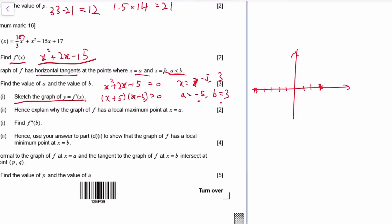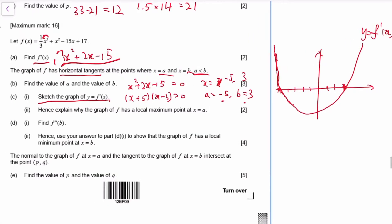The leading coefficient is positive so the parabola opens upward — roughly like this. To explain why f has a local maximum at a: by the first derivative test, if the gradient goes from positive to negative, that's a maximum. Since f'(x) changes from positive to negative at x = a, it is a local maximum. The other point, b, is a local minimum.